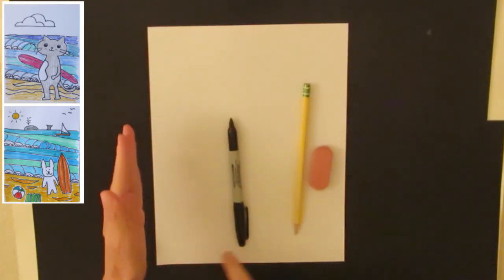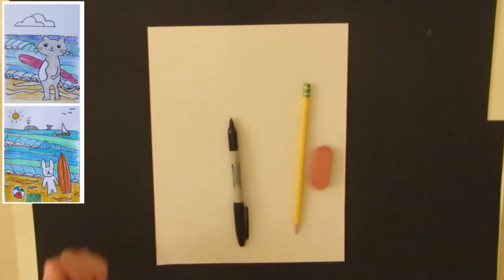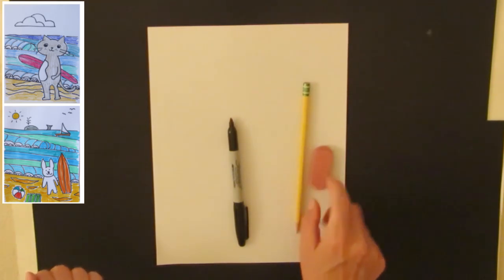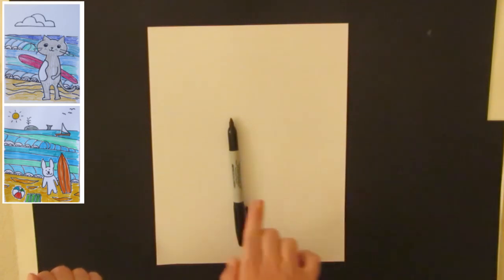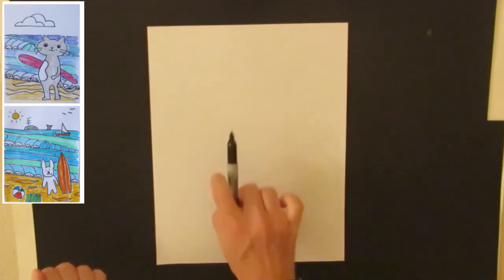You're going to want to start with your paper in the upright position or portrait. You're going to want to start with a pencil and eraser so you can adjust, but I'm going to use a pen so you can see what I'm doing.